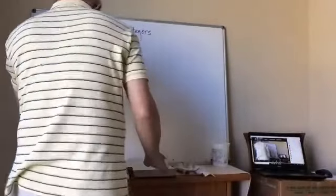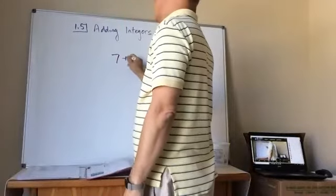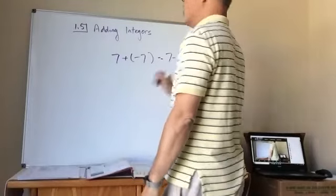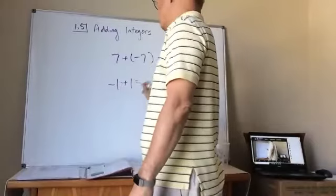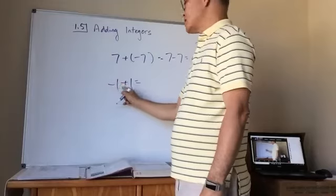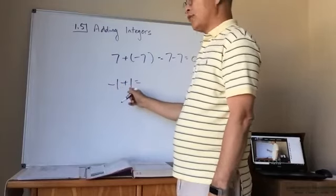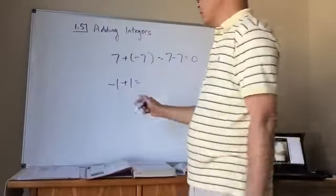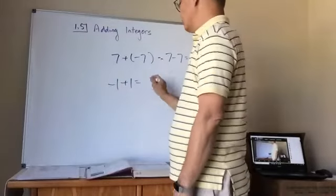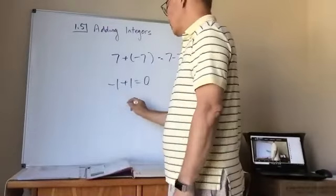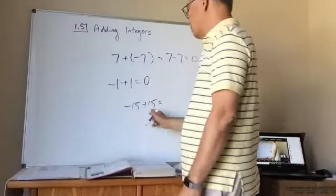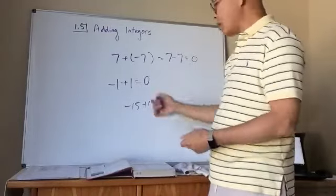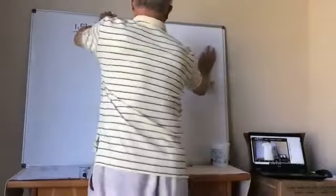The third rule is what we call opposites. If you have the same numbers with opposite signs, like negative 1 plus 1, you have different signs so you subtract — 1 minus 1 equals zero. There is no positive or negative zero. Similarly, negative 15 plus 15 gives zero. This is called the opposite.